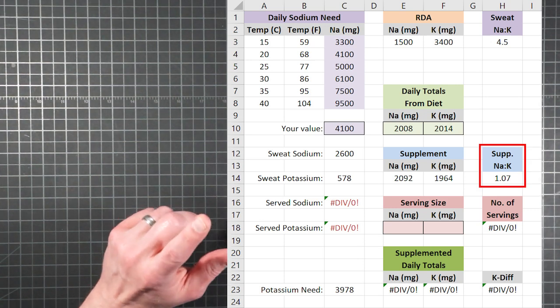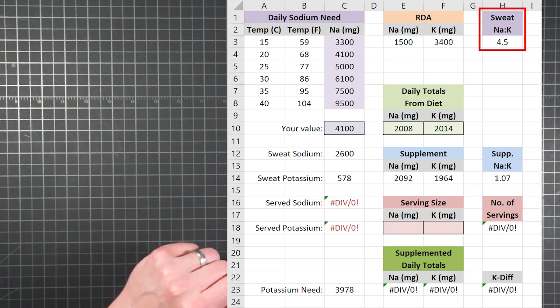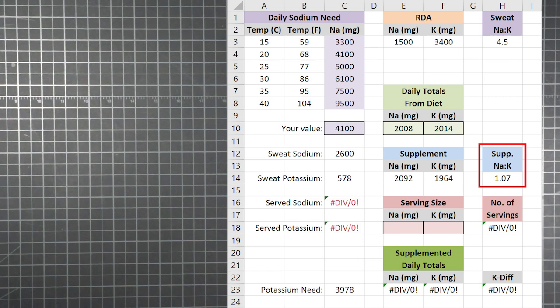Again, the open nature of the calculator will let you set this stuff to whatever is most personally applicable. Now there's one more number there at the end of the supplement section. And while this is the ratio of sodium to potassium in your sweat, this is the NAC ratio from what you end up needing to actually supplement after considering your diet.